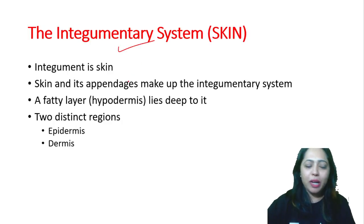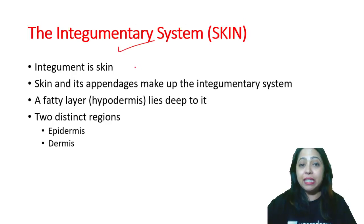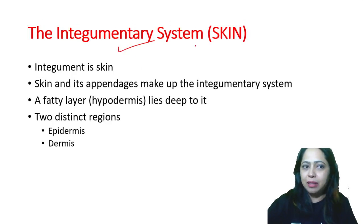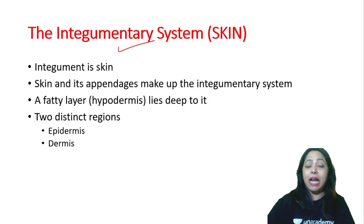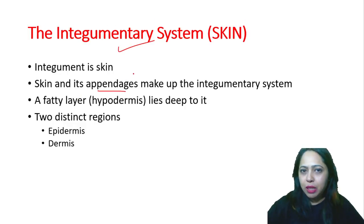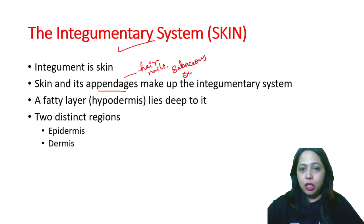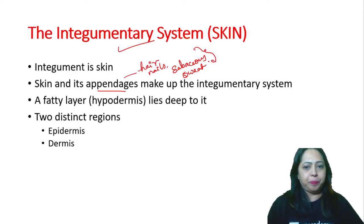Here, integumentary system. We are going to talk about the integumentary system — it is skin. 'Integumento' means skin. So, we have skin and its appendages. Appendages involve all those things that are present on the skin. We have hair, we have nails, the glands — like sebaceous glands and sweat glands — the appendages of the skin.